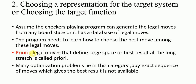A priori refers to legal moves that define the best result over a long stretch. Many optimization problems lie in this category. The exact sequence of moves which gives the best result is not always available.